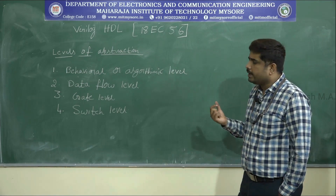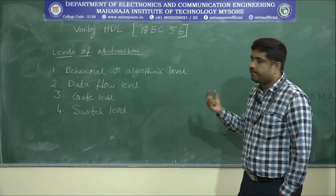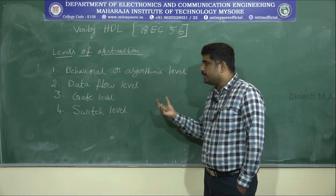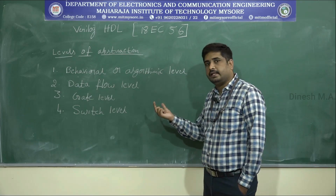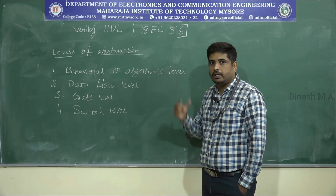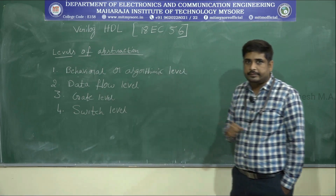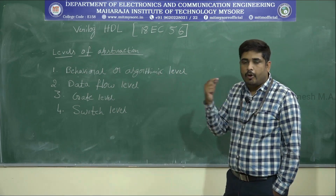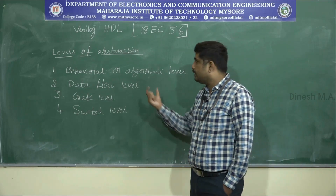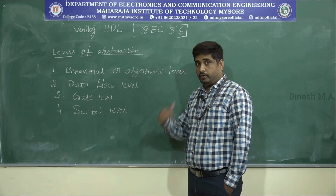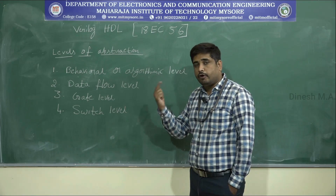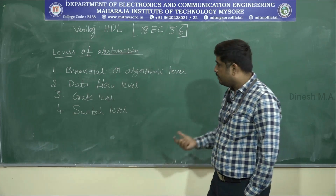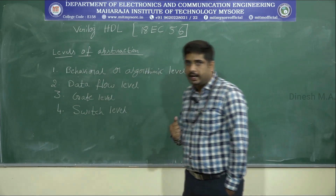The next one is gate level. As the name indicates, this describes the function in terms of gate level — we use different gates, design the gate, and then interconnect all the gates, which becomes the gate level description. Gate level description is used for complex circuits. For example, a full adder can be designed using data flow programming, but a 4-bit adder written in data flow is very difficult. That difficulty can be overcome by using gate level description.